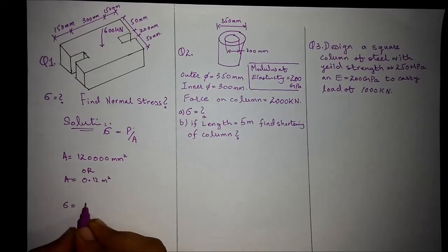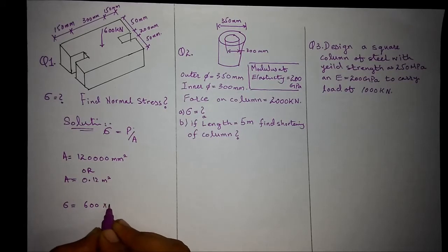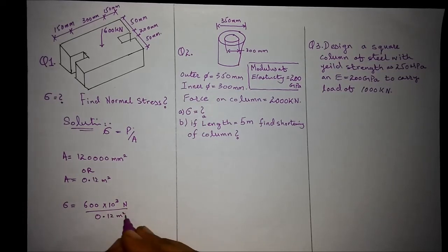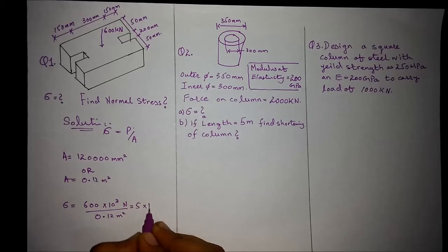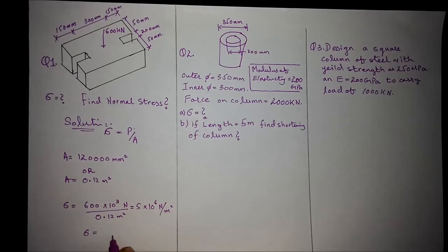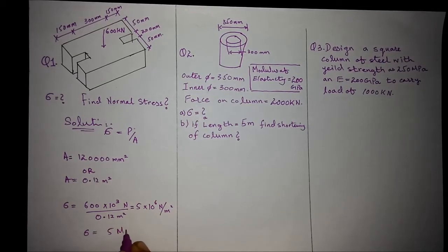Stress equals 600 times 10 to the power 3 newtons over 0.12 meter square. Upon solving it, it comes out as 5 times 10^6 newton per meter square, or you can say 5 megapascal, which was the required answer.